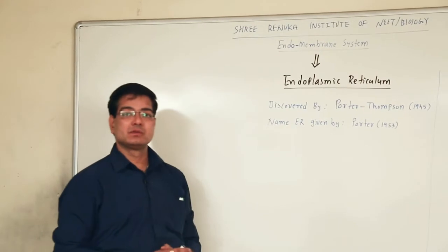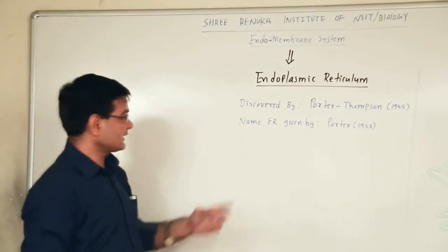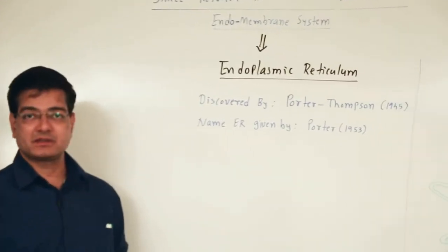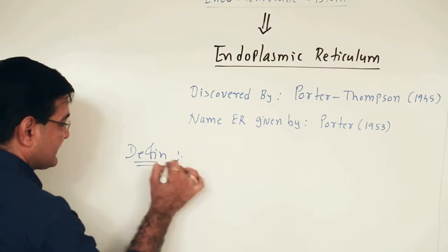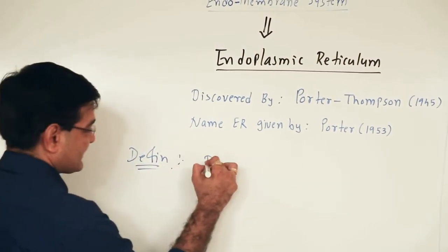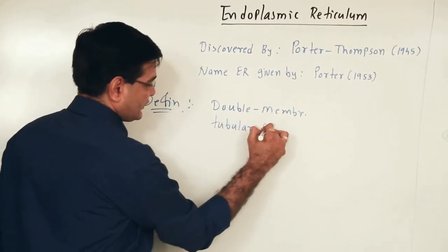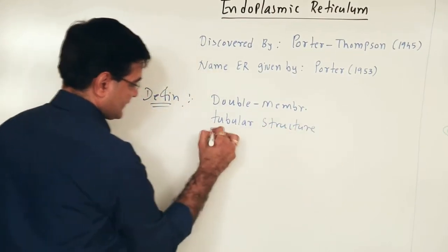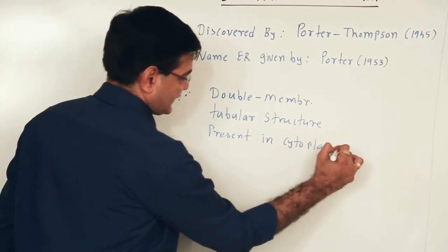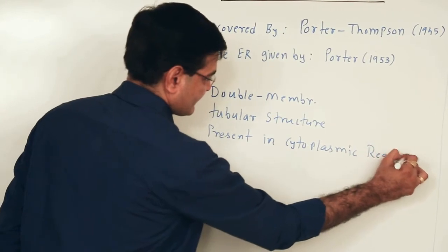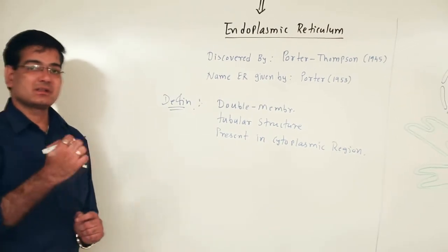Endoplasmic reticulum was discovered by Porter and Thomson in 1945. The name endoplasmic reticulum was given by Porter in 1953. The definition of endoplasmic reticulum: remember that it is a double membranous tubular structure present in the cytoplasmic region. As it is a eukaryotic cell organelle, it is a double membranous organelle.